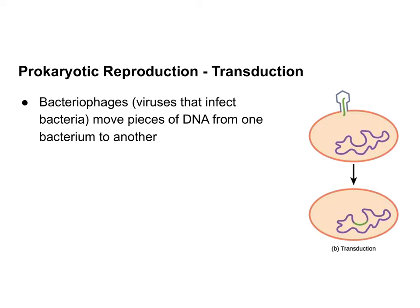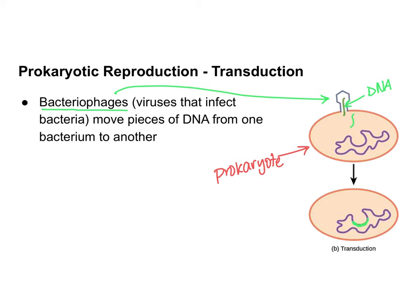Another way prokaryotes increase genetic diversity is through a process known as transduction. Bacteriophages — viruses that infect bacteria — carry DNA. As they inject that DNA into the host cell, that DNA may get incorporated into the host cell's DNA, creating a change in that DNA sequence from the original.